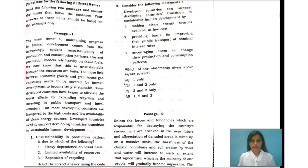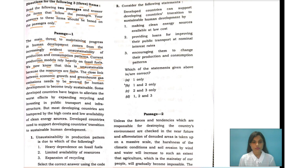The first question says directions for the following three items: read the following two passages and answer the items that follow. Your answers to these items should be based on the passage only. The main threat to maintaining progress in human development comes from the increasingly evident unsustainability of production and consumption patterns. Current production models rely heavily on fossil fuels, and we now know that is unsustainable because the resources are finite. The close link between economic growth and greenhouse gas emissions needs to be severed for human development to become sustainable.